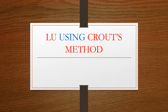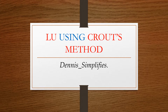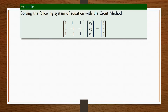We are back again with LU decomposition, this time using the Crout's method. Let's simplify. Solving the following system of equations with the Crout's method. From this, we can know that this matrix here is A, this one here is X, and finally here is B. So we are concluding that AX is equal to B.